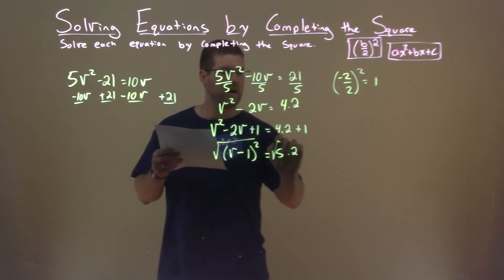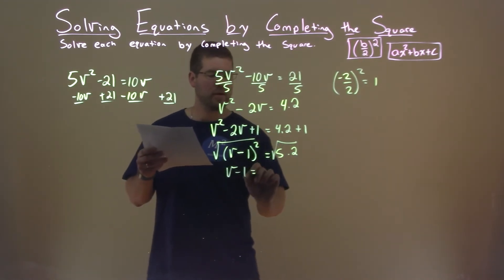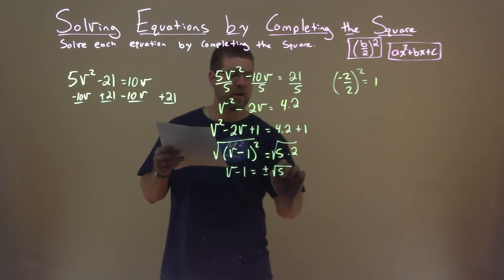We then can take the square root of both sides, and we have v minus 1 equals plus or minus square root of 5.2.